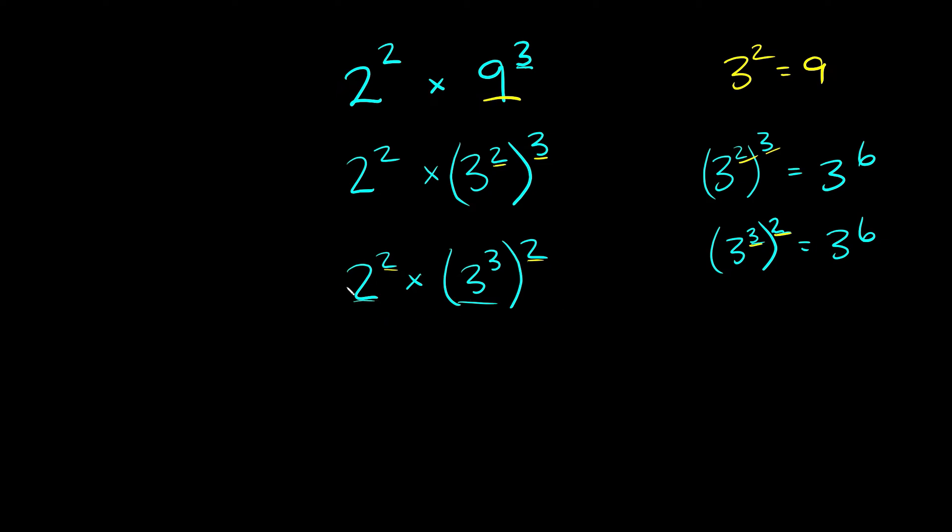The way you simplify this is you take your two bases. They're different in this case. We have a 2 and a 3 cubed. We're going to multiply those together, so we're going to say 2 times 3 cubed, and then since this has a 2 and this has a 2, you raise this whole thing to a 2.